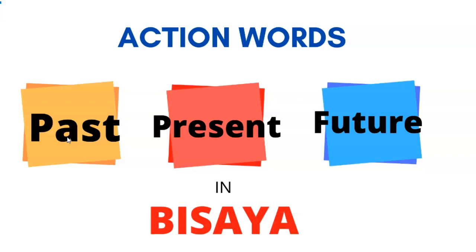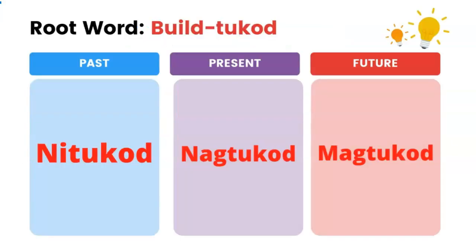Hi, in this video I'm gonna teach you action words in Visaya with past, present, and future tense. So as you can see, there is a root word at the top: English, Visaya, the past, present, and the future. Just follow me, I'm gonna read this way — past first, present, future. So let's get right to it.